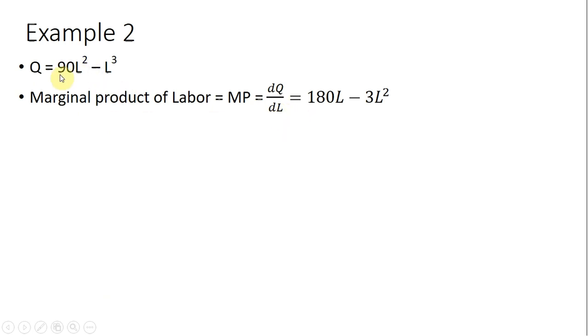Two times 90 is 180, and we're just going to be left with 180L. Bringing the three down in front here for the derivative, we're going to get 3L squared, and then 3 minus 1 in the exponent leaves us with L squared.